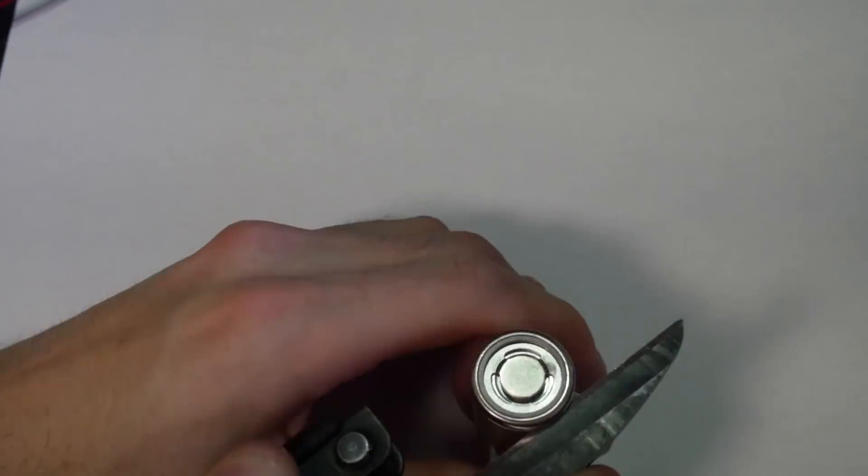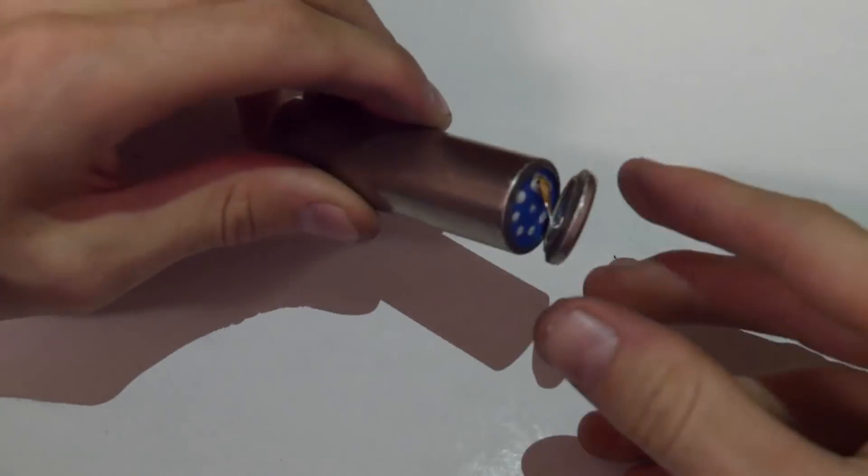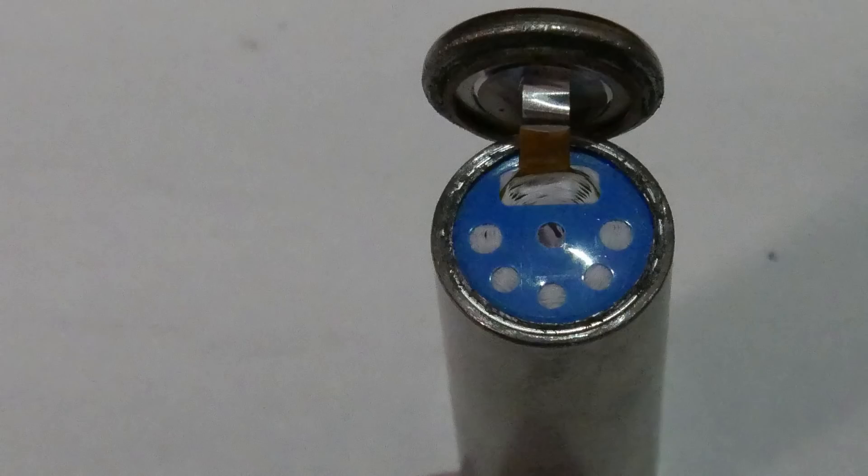I started cutting at the positive terminal, which made sure that I didn't damage the insides of the cell. Now this blue top we see here is a dielectric barrier used by Tesla. All that really is is just a plastic cap that prevents the jelly roll from touching the top of the battery, which would cause the cell to short circuit.